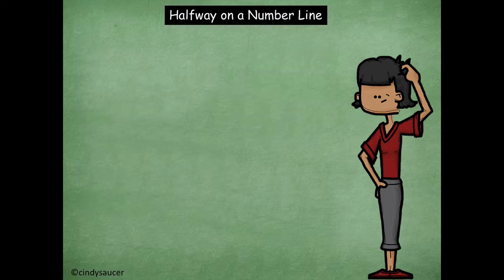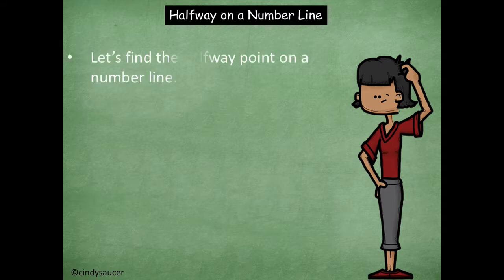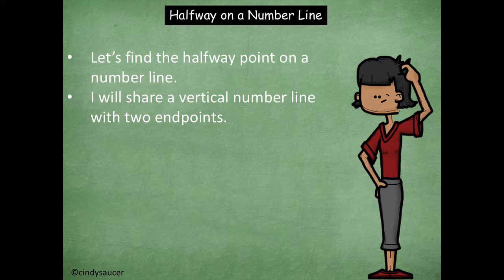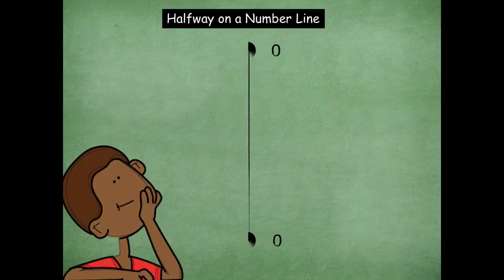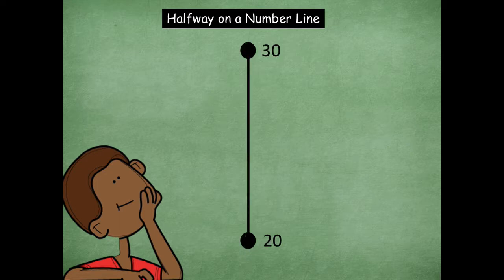All right. So let's work on the halfway point on a number line. So we'll review this. I'm going to share the vertical number line with the two endpoints already given to you and you will determine the halfway point between those two endpoints. Okay. So the first one is 20 and 30. So we'll start off one that's a little bit more simple and then we'll get more challenging as we go on.